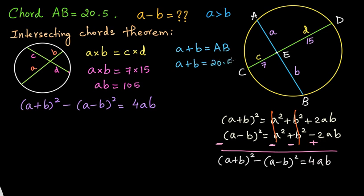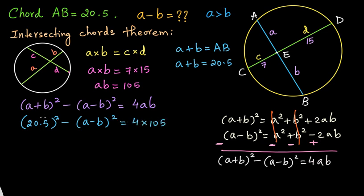So we have A plus B and we have AB; we can find A minus B by substituting into the formula. A plus B whole square is 20.5 squared. Keeping A minus B whole square as it is, it equals 4 times AB. AB is 105, so 4 times 105 is 420. And 20.5 squared is 20.5 times 20.5, which gives us 420.25.